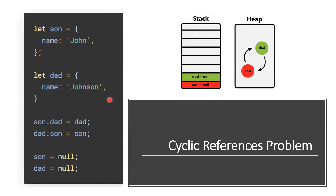For example, I have an object son and also an object dad. For son.dad property I am assigning the dad object, and for dad.son property I am assigning the son object. This means I am forcefully creating a circular reference problem.